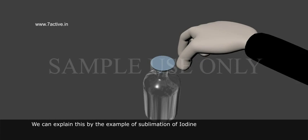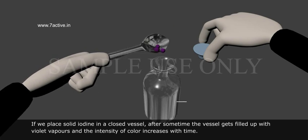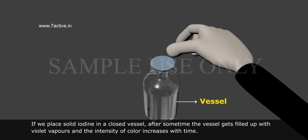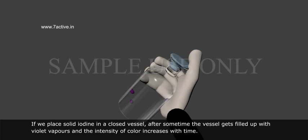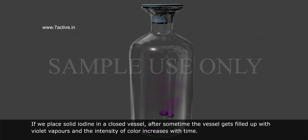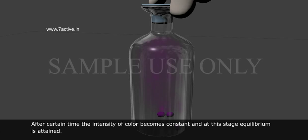Solid Vapor Equilibrium. We can explain this by the example of sublimation of iodine. If we place solid iodine in a closed vessel, after some time the vessel gets filled up with violet vapors and the intensity of color increases with time. After a certain time, the intensity of color becomes constant and at this stage, equilibrium is attained.